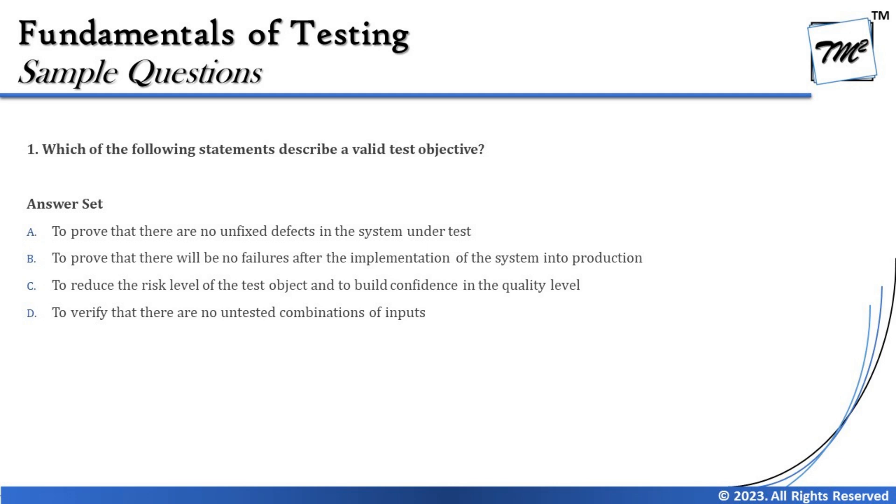Option B says: to prove that there will be no failures after implementation of the system into production. This again conflicts with Principle 1 — since we cannot assure a defect-free product, there is no such promise that there will be no failures in production. There may be defects we miss or that leak to production. Testing assures we have tested well and predicts fewer failures, but it cannot be a hard, bold statement that there will be no failures in production.